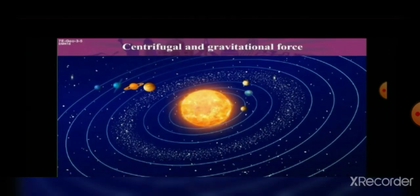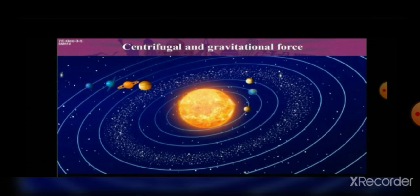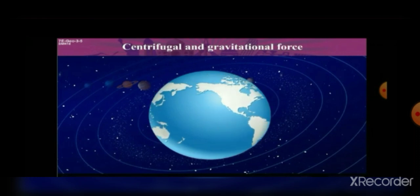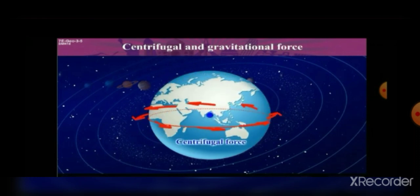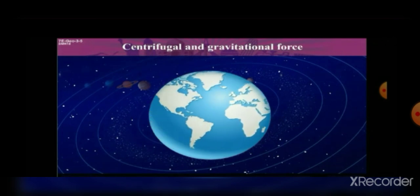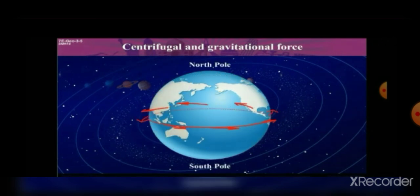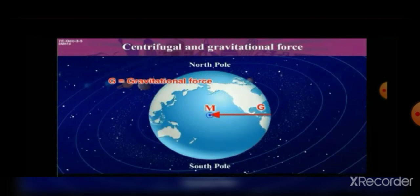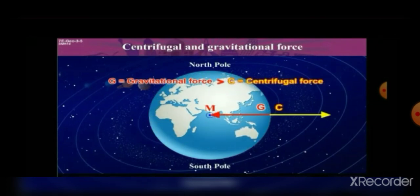Geographically, due to the rotation of the Earth, it gets a force that works away from the center — that is called centrifugal force. Whenever you are throwing an object away from the Earth into space, it works because of the centrifugal force. But the gravitational force is much greater than the centrifugal force, and therefore everything on the Earth remains stable — it does not move or fall apart.